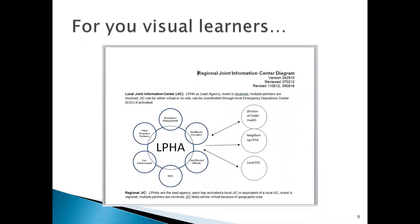For visual learners, there is also a regional joint information center diagram that describes the process of escalation: public information needs would start local, then reach horizontally, and if still overwhelmed, reach vertically — in this case up to the Regional Medical Coordinating Center.